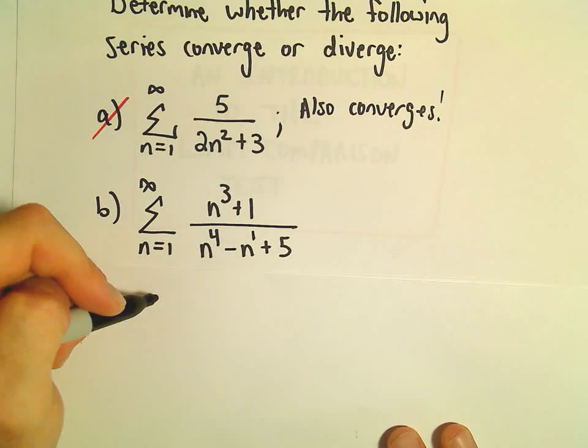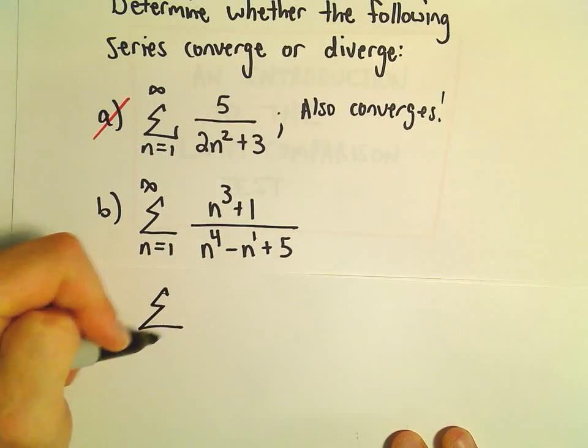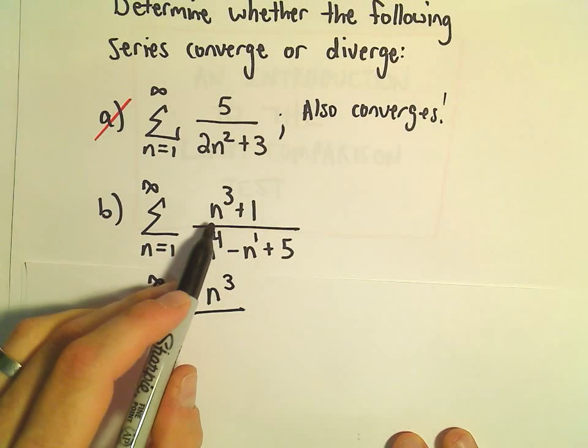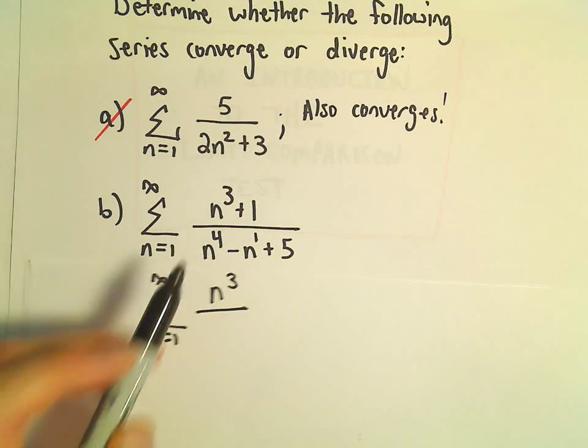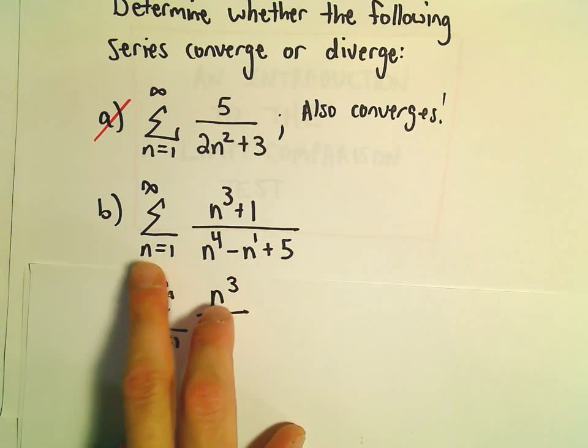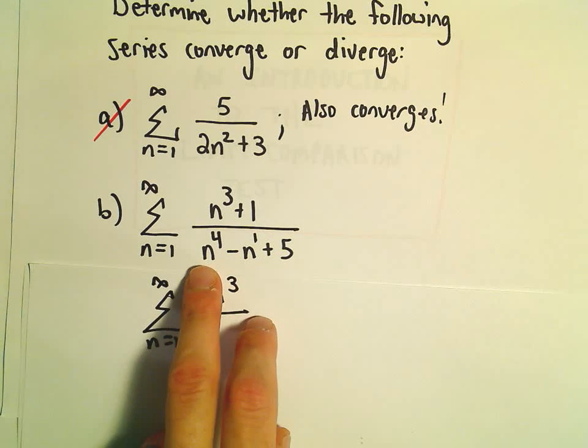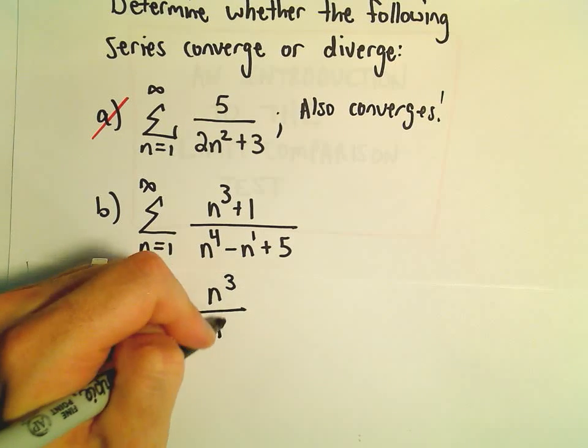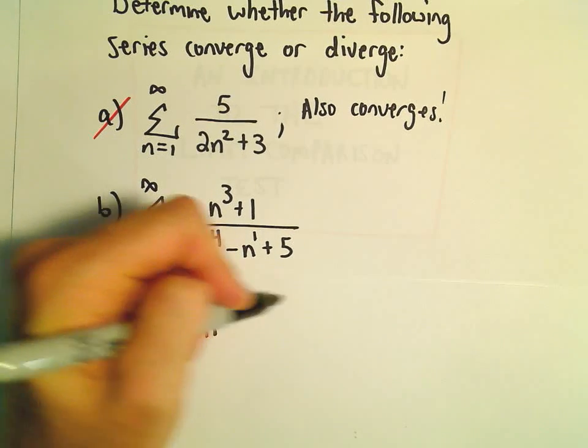So I'm going to do the same trick as before. I'm going to keep these dominant terms. So in the numerator, the value that will get largest the fastest will be the n to the 3rd. In the denominator we've got n to the 4th and then we have an n. As n gets large, n to the 4th is going to get much bigger, much faster than n to the 1st will. So n to the 4th is the dominant term in the denominator.